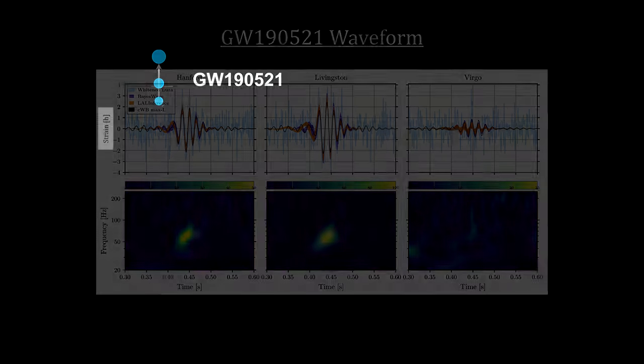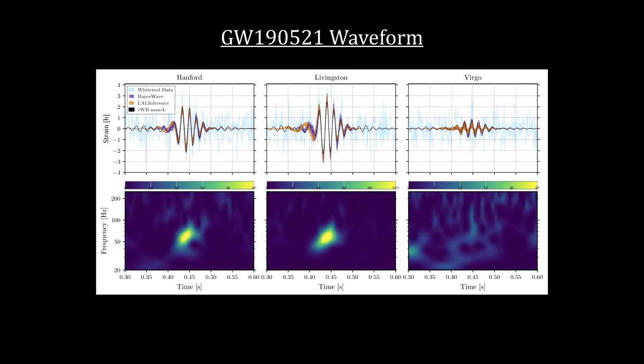On May 21, 2019 at 3:02 and 29 seconds Coordinated Universal Time, Advanced LIGO and Advanced Virgo observed a short-duration gravitational wave signal, GW190521.